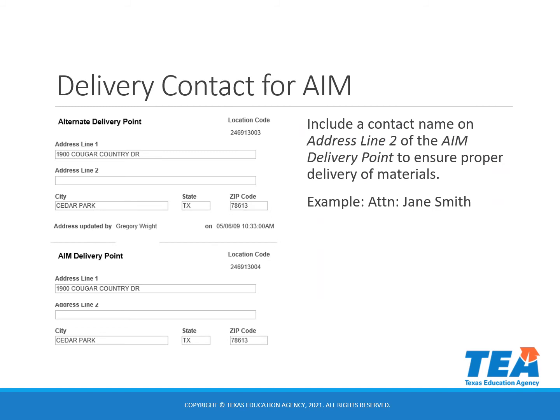In your district's delivery contact information and your AIM delivery point, it's a good idea to provide a name in the address line 2 field if possible. This helps to avoid orders being misplaced, especially during the summer months.